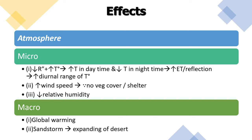What are the effects on the atmosphere? At the micro level, rainfall is reduced, temperature increases, day temperatures increase while night temperatures are reduced, evapotranspiration and reflection increase, and the diurnal range of temperature increases — nights are very cold and days are very hot. Wind speed increases because there is no vegetation or shelter, and relative humidity decreases.